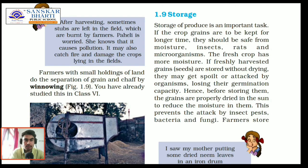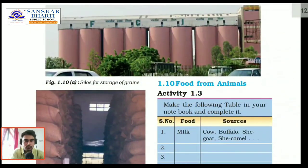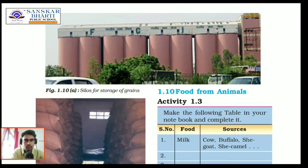The last and most crucial step of crop production and management is storage. Storage of the produce is an important task. If crop grains have to be kept for a longer time, they should be safe from moisture, insects, rats and microorganisms. Fresh harvested crops have more moisture, so before storage they need to be dried in sunlight. For storage of grains in large quantities, granaries and silos are used to save from pests like rats and insects. At home, dried neem leaves are used for storage of grains.